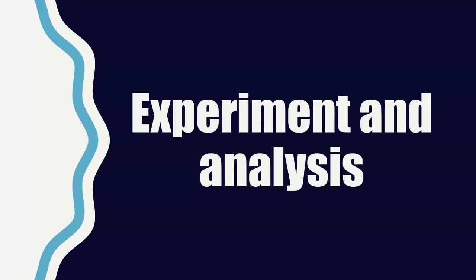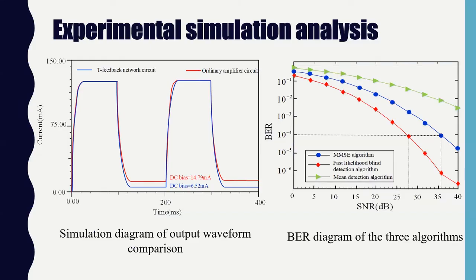The fifth part is the experiment and analysis. The T-feedback network trans-impedance amplifier circuit at the photoelectric receiving end was simulated and compared with the ordinary trans-impedance amplifier circuit. The input current signal was a square wave signal of 10 kHz, and the simulation results are shown in the figure on the left. The simulation results show that compared with the ordinary trans-impedance amplifier circuit, the DC bias is reduced by 55.9%. The T-feedback network can effectively reduce the DC bias through the compensation resistor.